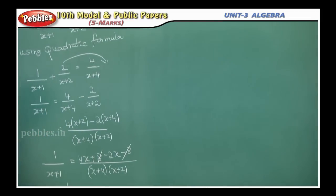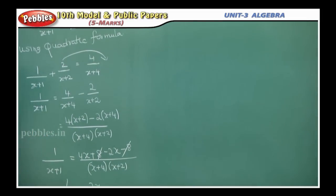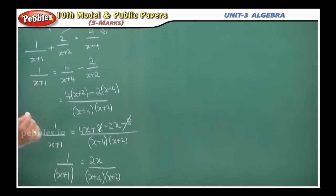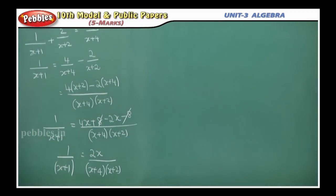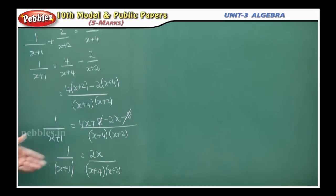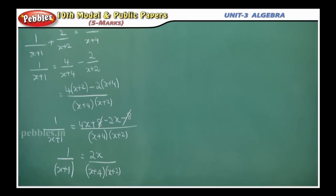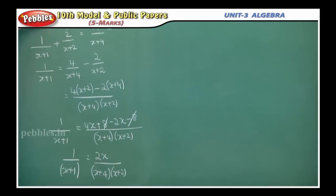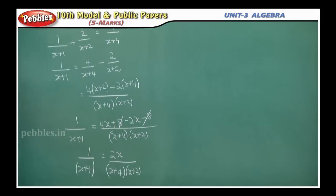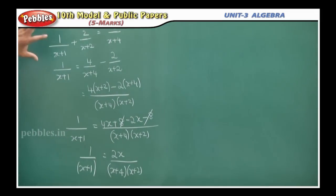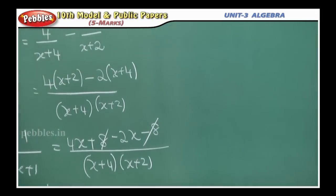So the equation is now 2x / [(x+4)(x+2)] = 1/(x+1). Now you have to cross multiply. That way we can arrange it like a quadratic equation, and then we can use the quadratic formula.